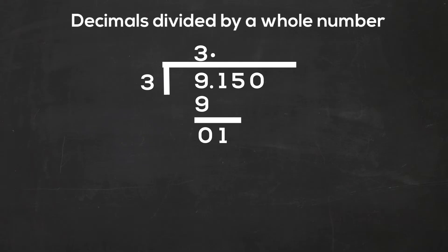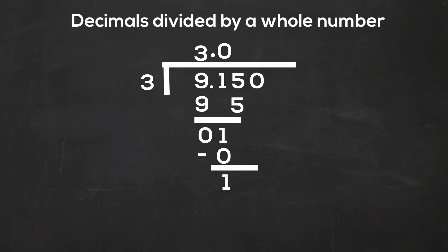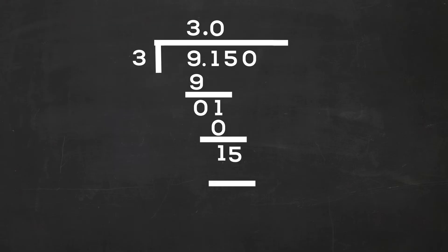9 minus 9 is 0. Let's bring down the 1. 3 will not go into 1, so I'm going to multiply it by 0. 0 times 3 is 0. 1 minus 0 is 1. Bring down the 5. Now 3 goes into 15 five times. 5 times 3 is 15. When I subtract 15 from 15, I get 0.